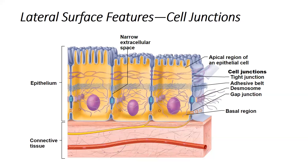The final junction at the bottom are gap junctions. These are basically channels or pores that go from one cell to the other and help the cells synchronize by allowing them to transport or communicate information between each other.